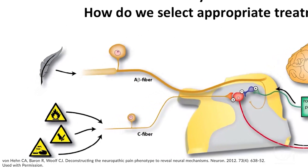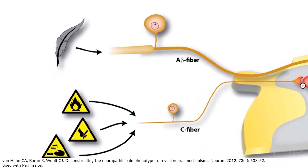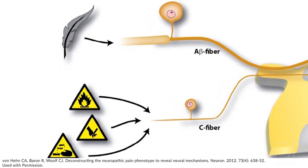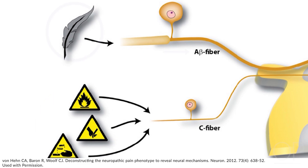We have two clear sets of sensory fibers in the periphery: those with a high threshold — the nociceptors, activated only by noxious stimuli and which produce nociceptor pain — and the low threshold fibers which normally produce only innocuous sensations.